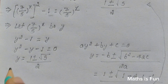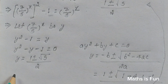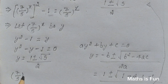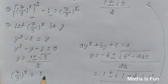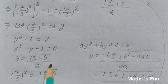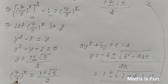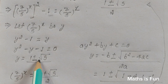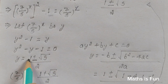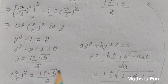Substituting back, 7 over 5 to the power x equals 1 plus or minus root 5 over 2. We only consider the positive sign, because 7 over 5 to the power x gives a positive number. The negative case would give a negative value since root 5 is greater than 1, so that is not possible. Therefore, 7 over 5 to the power x equals 1 plus root 5 over 2.